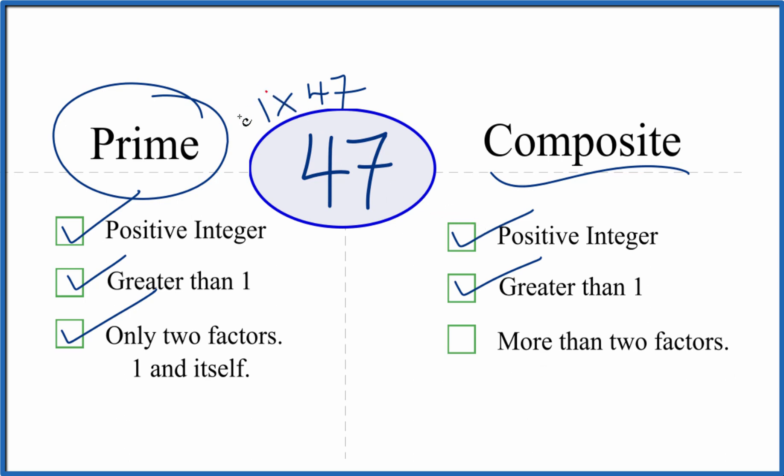We just said that there are only 1, 2, not more than 2. So 47, that's not a composite number. So in answer to our question, the number 47 is prime.